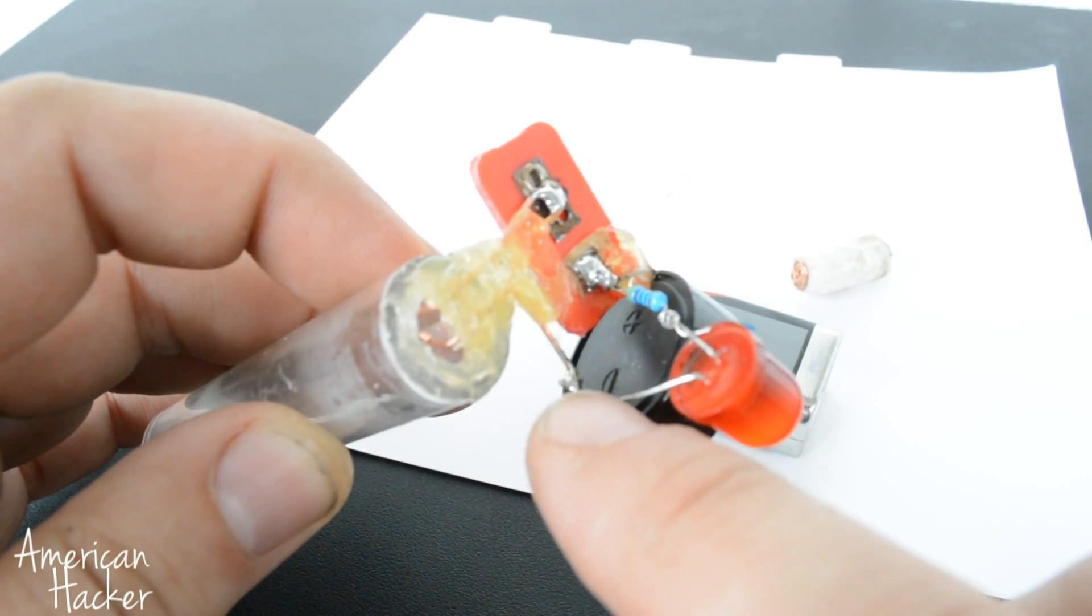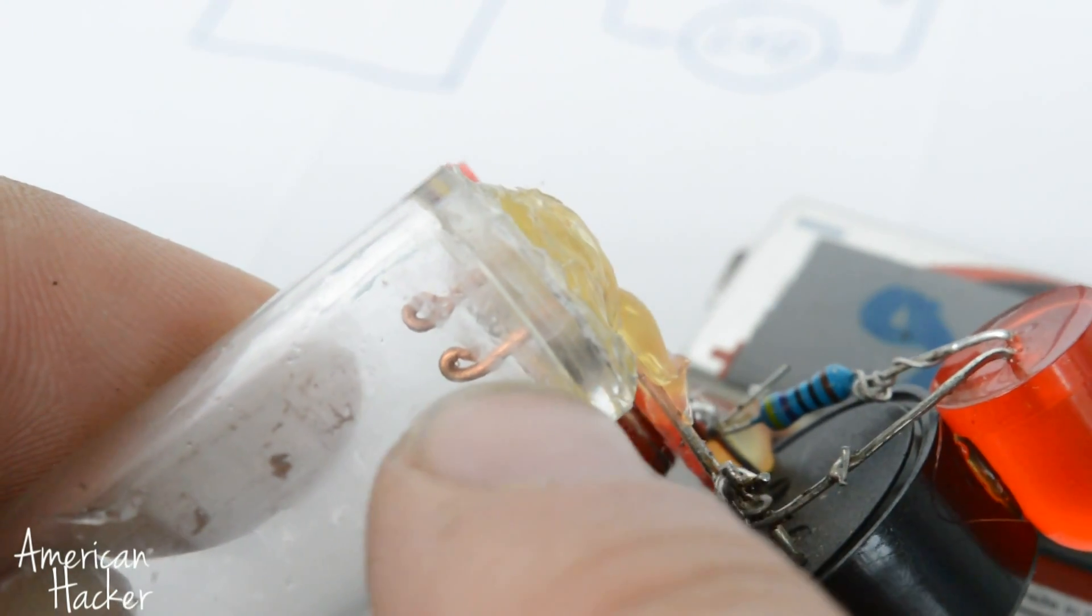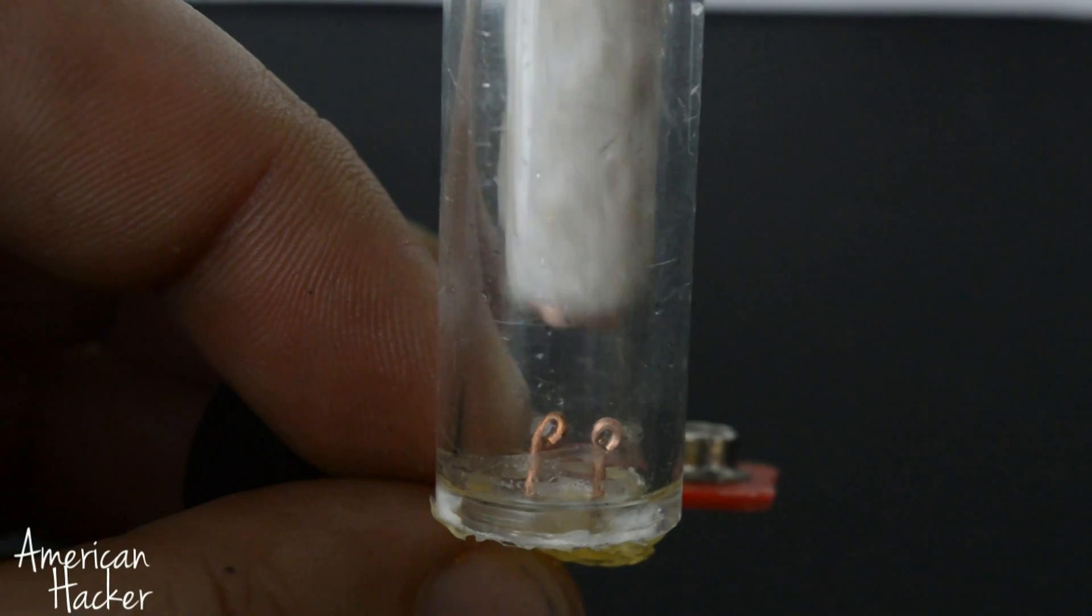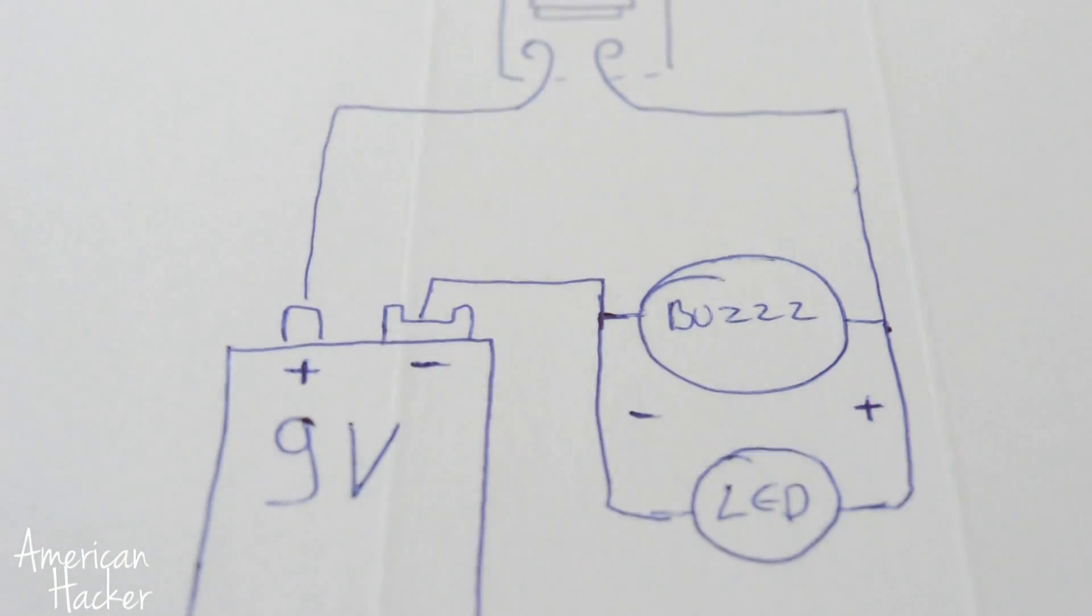The negative wire from LED and buzzer are connected through a switch that is inside the plastic tube and when styrofoam touches the probes, the circuit is closed and the alarm is activated.